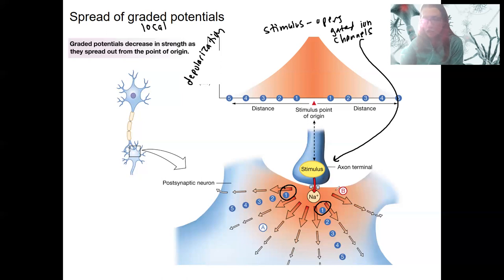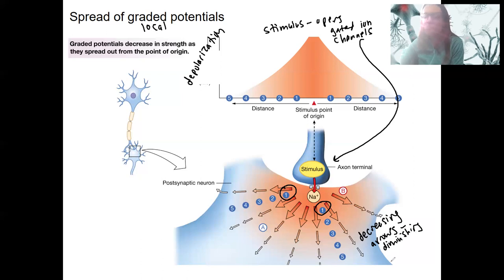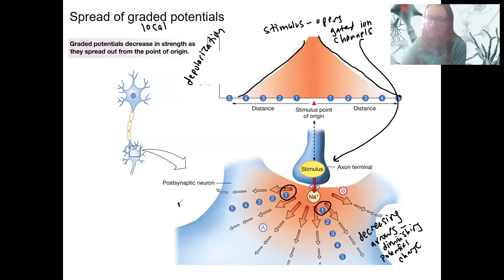Representing the strength of that stimulus as it travels away from the site of origin, that depolarization decreases as we get farther away from the site of stimulation. So points two, three, four, five are shown by these decreasing arrows, representing a diminishing or decreasing potential change — a decreasing depolarization. That is shown graphically like this, showing the same idea: as you get further away from the point of stimulation, the effect of that stimulation decreases.